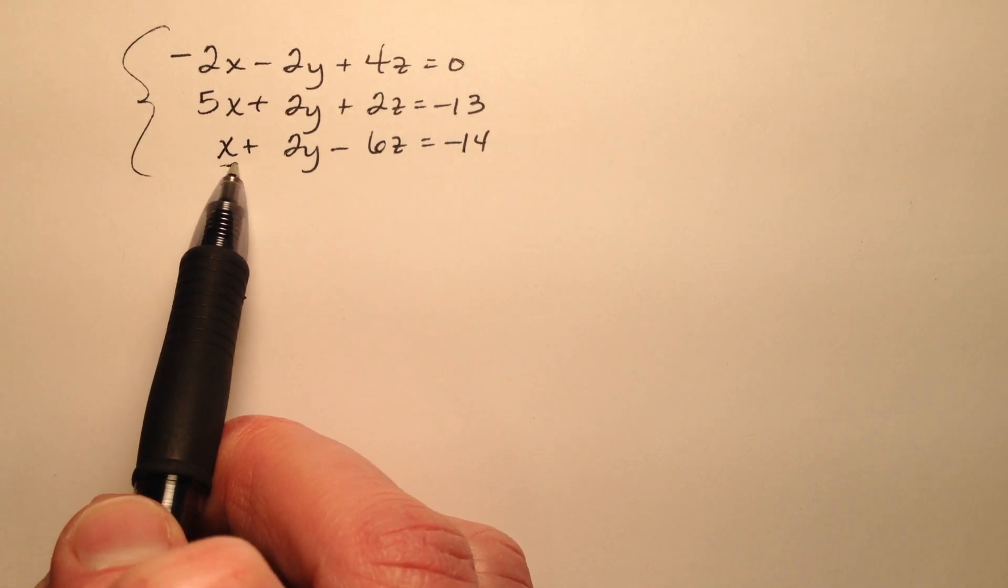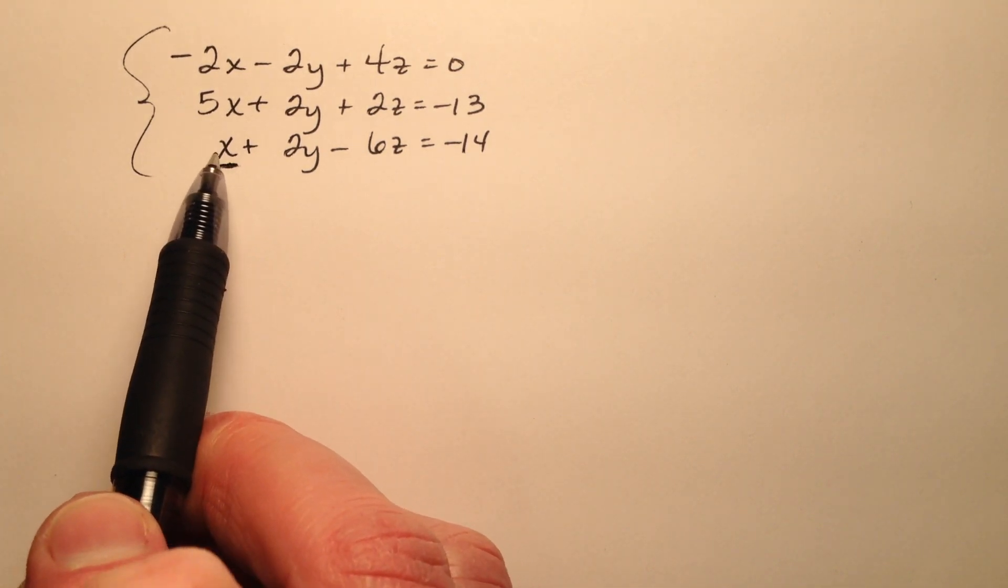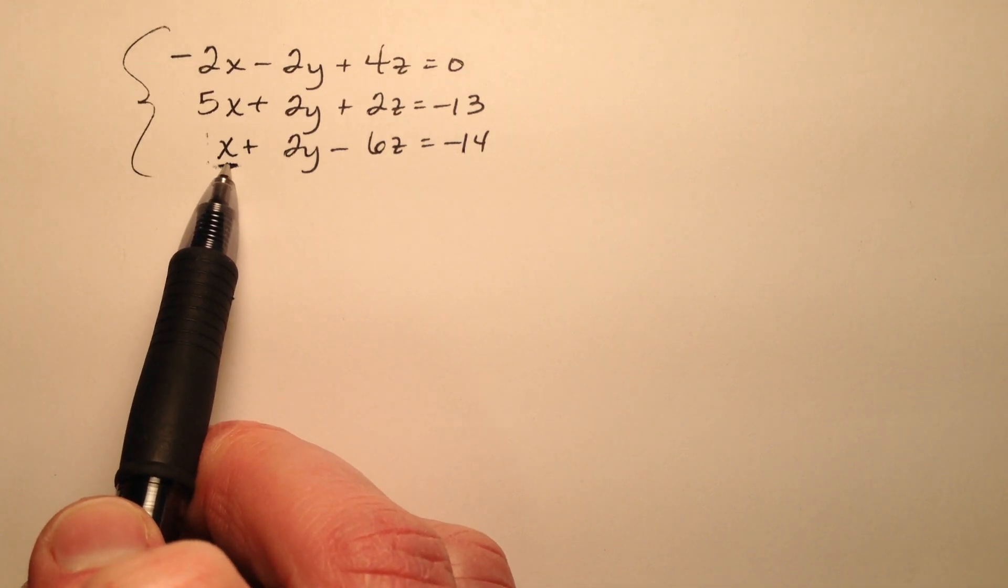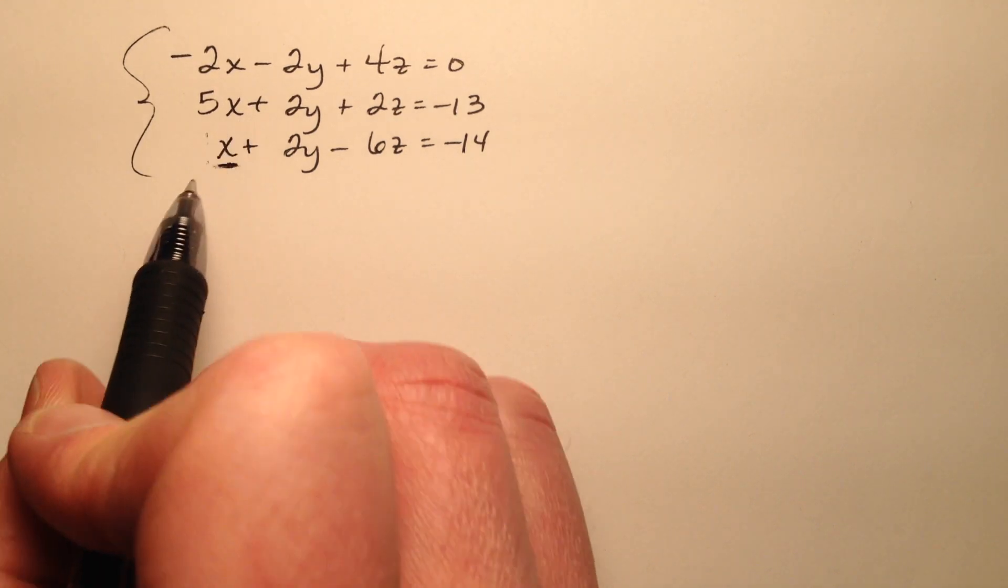So I see in the third equation, this x variable has a coefficient of 1 and will be easily isolated. So let's go ahead and solve the third equation for x.